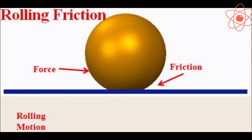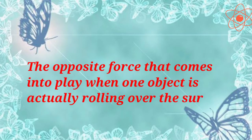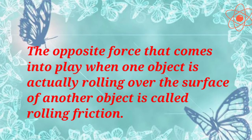Now, rolling friction. The opposing force that comes into play when one object is actually rolling over the surface of another object is called rolling friction.